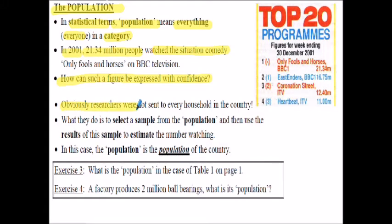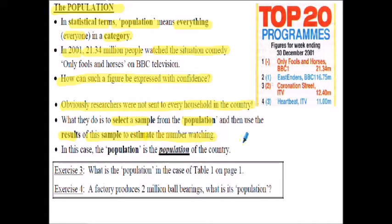What they do is select a sample from the population and then use the results of the sample to estimate the number of people watching out of the population. In this case the population was the population of the country. What would be the population in table one, referring back to our manufacturing company and the various job categories? I'll let you look at that.